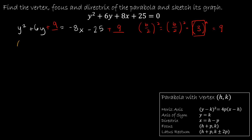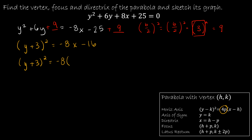The left side becomes (y + 3)² since it's a perfect square trinomial. On the right side, I have −8x and −25 + 9 = −16. Factoring the right side: (y + 3)² = −8(x + 2). Now identifying values: y − k means k = −3; x − h means h = −2; and −8 = 4p, so dividing by 4 gives p = −2.